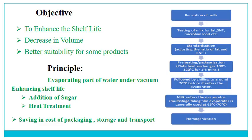The objective is to enhance the shelf life and decrease the volume. Sometimes we may have a large amount of excess milk which is very difficult to store, so by making condensed milk we can reduce the volume, increase the shelf life, and achieve better suitability for preparing certain products. The principle is evaporating part of water under vacuum using a special evaporator, and enhancing shelf life by addition of sugar. A large amount of sugar is added which plays an important role in preservation, along with heat treatment.